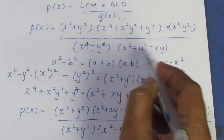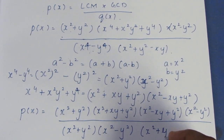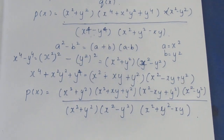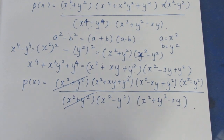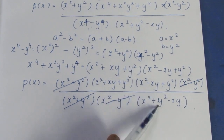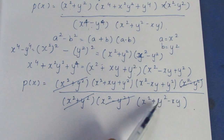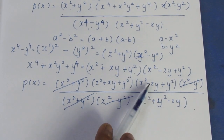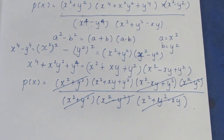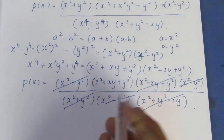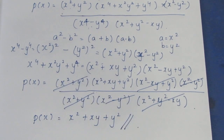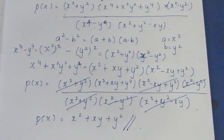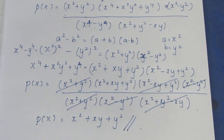After cancellation, x² plus y² minus xy terms cancel with the denominator. P of X is equal to x² plus xy plus y². This is the final answer for P of X in the second subdivision.